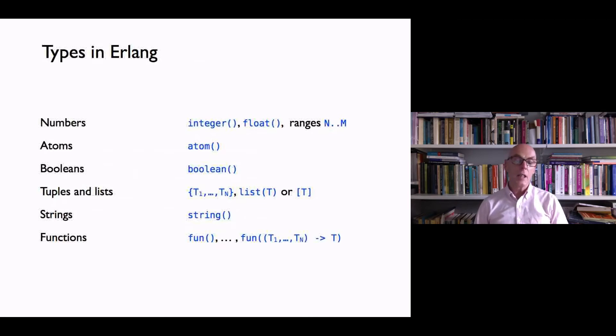String, which is an abbreviation for list of characters. And we can say things are of function type. This is something we'll talk about next week. We can just say it's a function, or we can say very specifically it's a function that takes things of type T1 up to TN and gives us back something of type T.